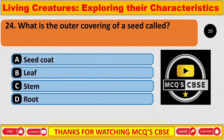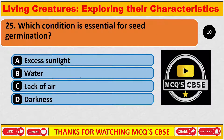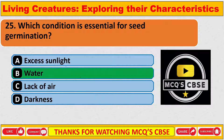What is the outer covering of a seed called? The correct answer is D — seed coat.